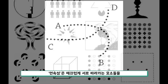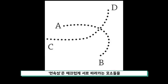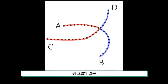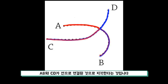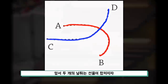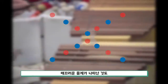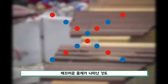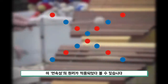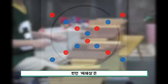연속성은 매끄럽게 서로 따라가는 요소들을 연결짓는 것을 말합니다. 위 그림의 경우 A, C와 B, D를 선으로 연결되었다고 지각하기보다 A, B와 C, D가 선으로 연결된 것으로 지각한다는 것입니다. 앞서 두 개의 널뛰는 선율이 합쳐지자 매끄러운 음계가 나타난 것도 이 연속성의 원리가 적용되었다 볼 수 있습니다.